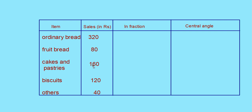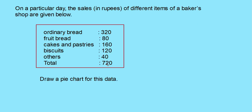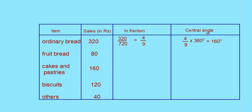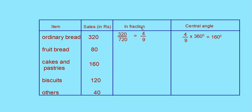Items: ordinary bread 320, fruit bread 80, cakes and pastries 160, biscuits 120, others 40. Total is 720. Ordinary bread as a fraction is 320 by 720, which simplifies — cancelling by 8 gives 4 by 9. To find the central angle, multiply 4 by 9 into 360, which equals 160 degrees. Similarly, find fractions and central angles for all other items.